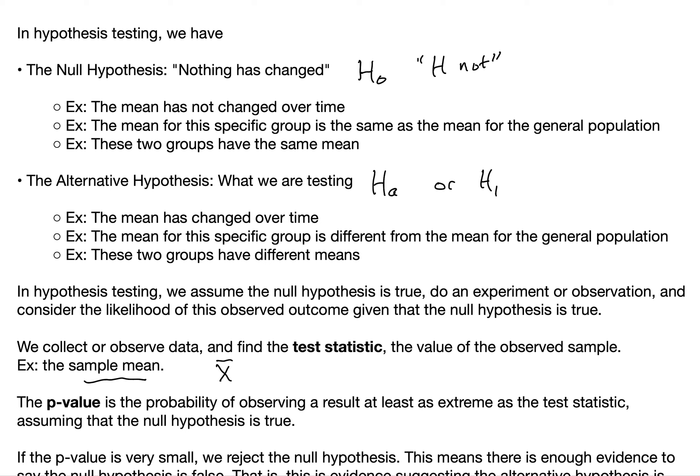For example, we look at 100 individuals and ask how long it took them to graduate from college, and X-bar — the average amount for that sample — is the test statistic. We then find the probability of observing a result at least as extreme as the test statistic, assuming the null hypothesis was true. This is the p-value: the probability of observing a result at least this extreme, assuming the null hypothesis is true.